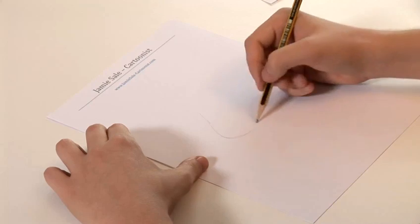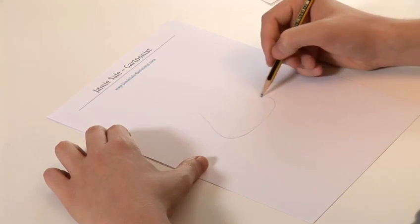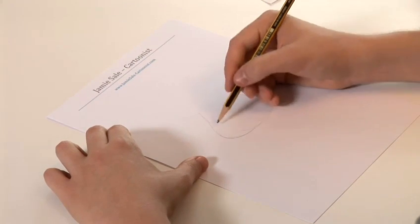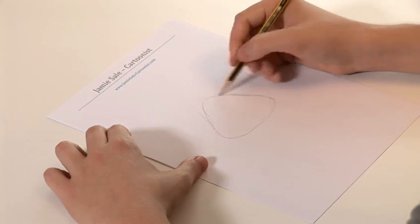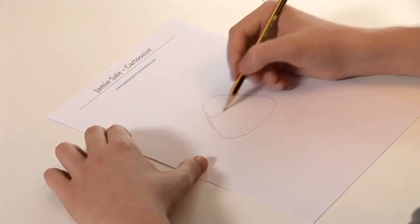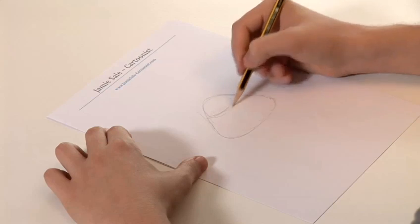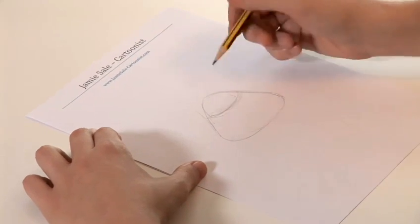Firstly, we start off with a soft triangular shape to represent his body. It goes all the way up to a tip there. Draw a line about this far down. That's going to be his shirt.